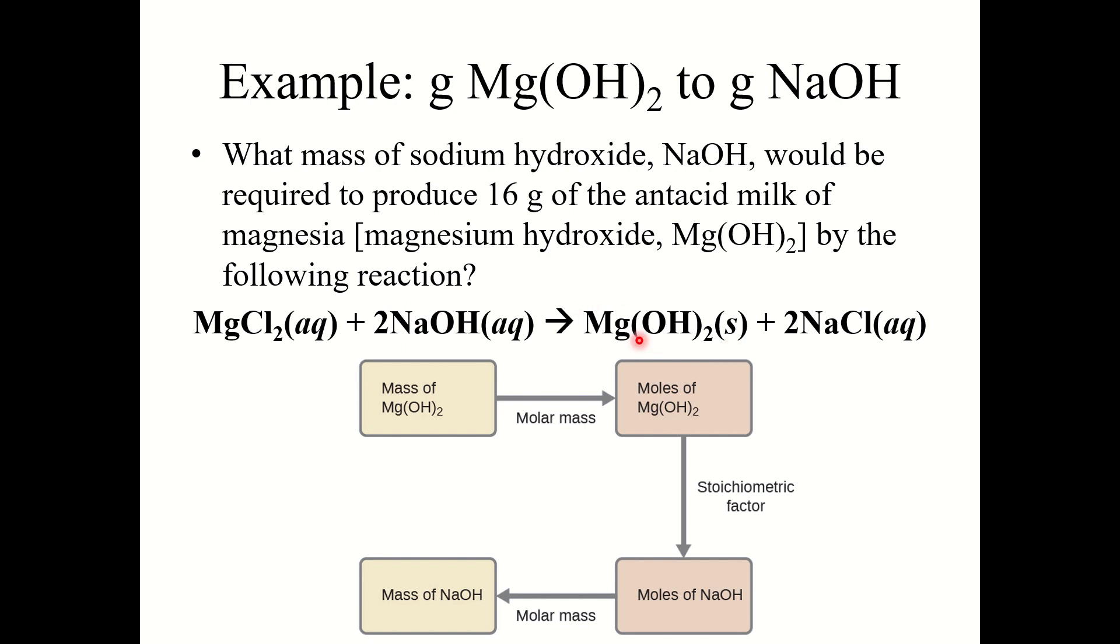We need to go from mass Mg(OH)2 to mass NaOH. We need to break this into multiple steps. First we need the molar mass of magnesium hydroxide so we can figure out moles Mg(OH)2. Then we can use our stoichiometric factors to convert from moles Mg(OH)2 to moles NaOH. And then final step, convert from moles NaOH to mass NaOH using its molar mass.